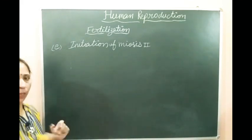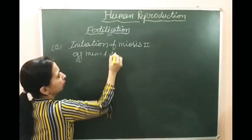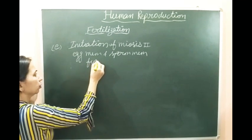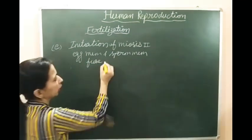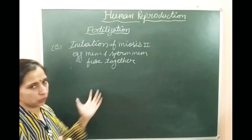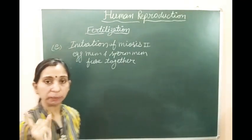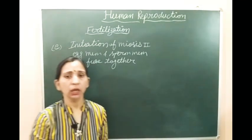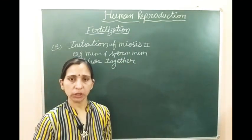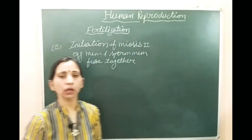As we already discussed, when the egg membrane and the sperm membrane fuse together, after this fusion the exit content is now initiated. As we discussed in oogenesis - you can refer to that video again - meiosis two is the division which is initiated when the sperm comes in contact with the egg.